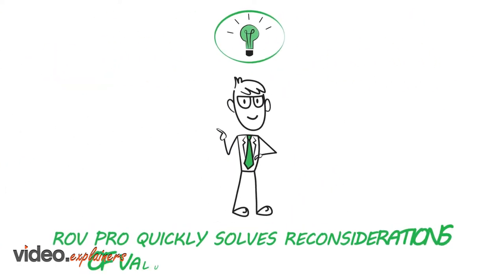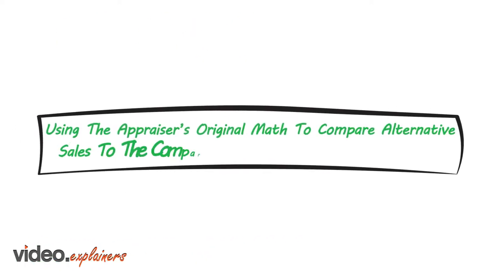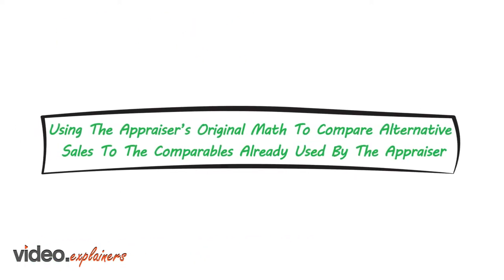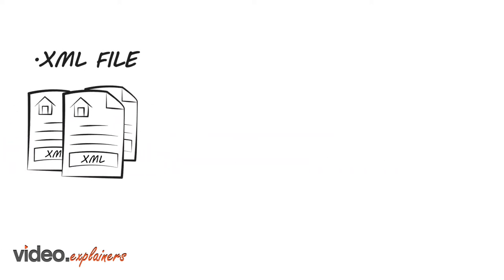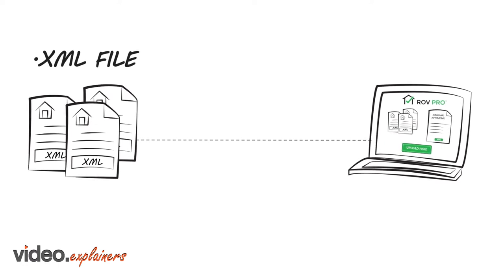ROV Pro quickly solves reconsideration of value disputes by using the appraiser's original math to compare alternative sales to the comparables already used by the appraiser. Once the alternative sales are gathered, upload them to the original appraiser .xml file into ROV Pro.